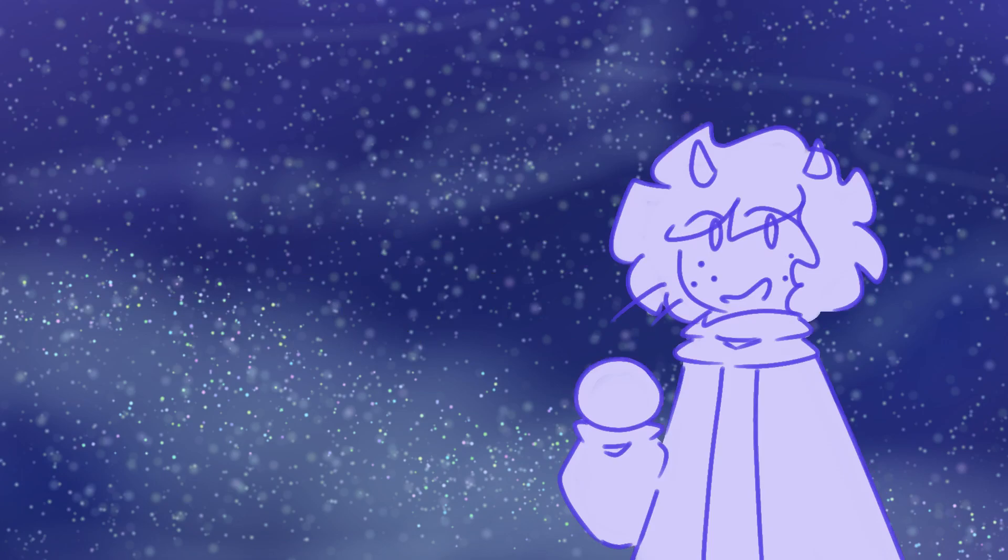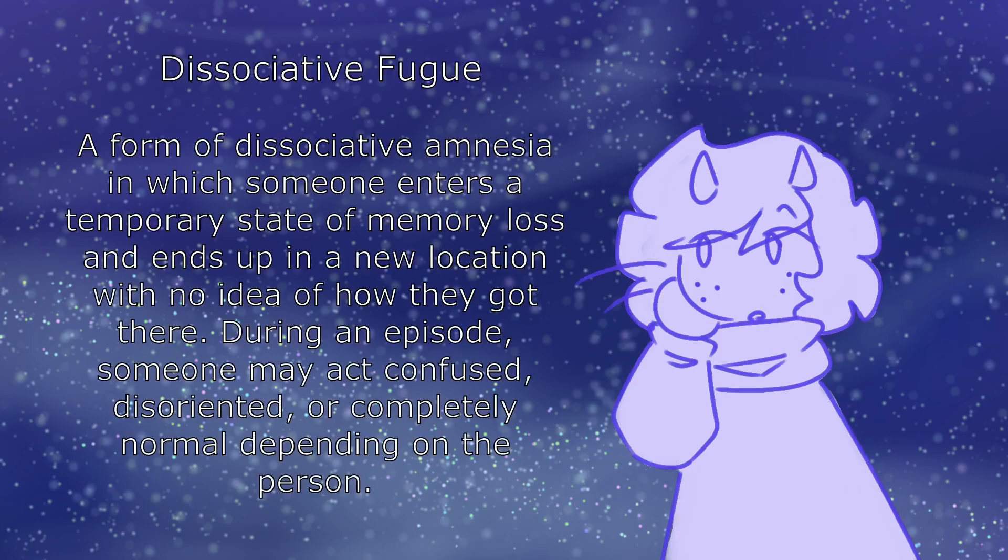Another form of dissociative amnesia is dissociative fugue. This is a bit different from the other forms of dissociative amnesia I've been discussing. Dissociative fugue is a temporary state of memory loss where someone ends up in a place with no memory of how they got there. One moment they could be sitting at home, and the next they could be 15 minutes away at a random park with no memory of how they got there.